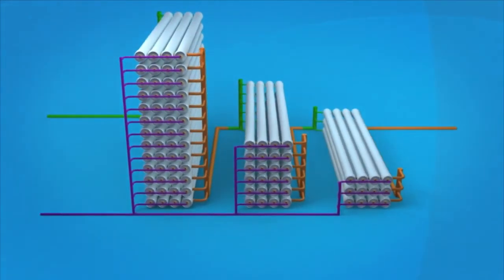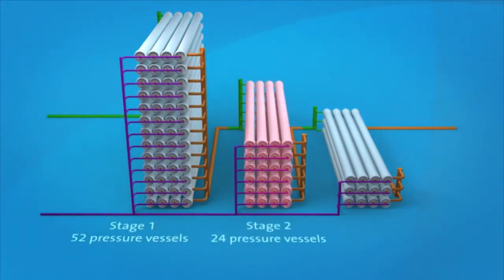Stage one has 52 pressure vessels. Stage two has 24 pressure vessels. And stage three has 12 pressure vessels. 58 million litres of feed water enters the reverse osmosis system on a daily basis.